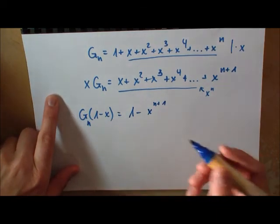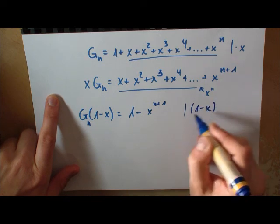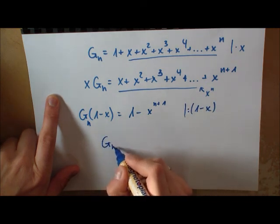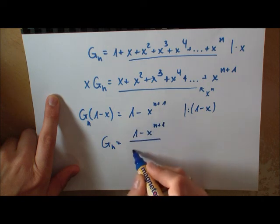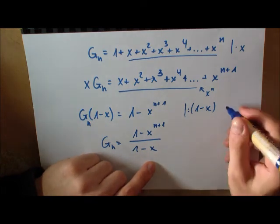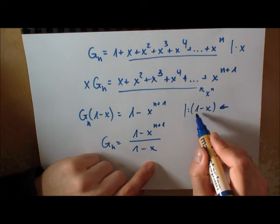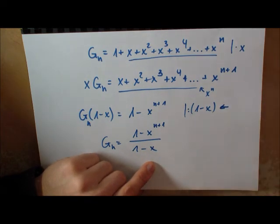So these are going away, we get 1 minus only this. This looks really nice. What could one do is just divide by 1 minus X. I'm just dividing this and I'm getting the geometric series is equal to that.